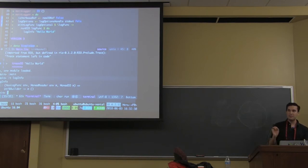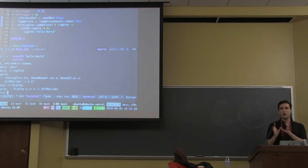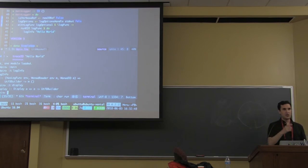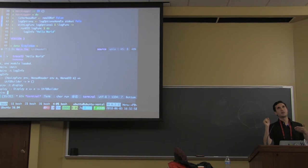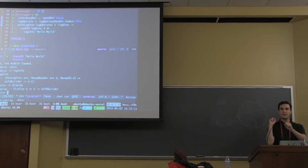UTF8Builder is a type you can create using a function called display. Display is a replacement for show. We don't want to use show for purposes of serializing things for humans to see. First, show serializes stuff into strings, and strings are slow. Second, there's a rule — not always followed — that if you have a show instance, you need to have a corresponding read instance. If you show something, you should be able to read it back. That's why you don't have show for IO.